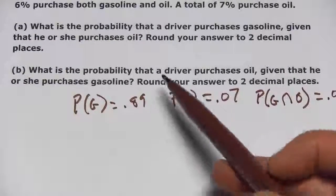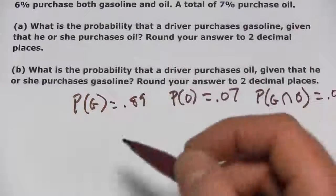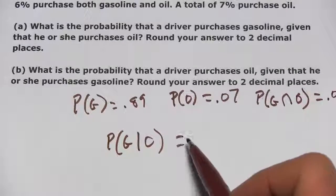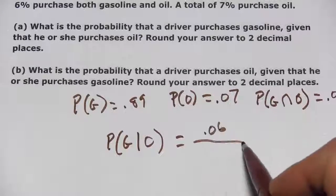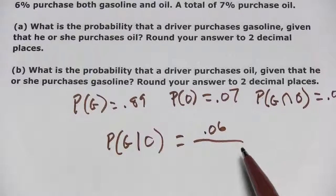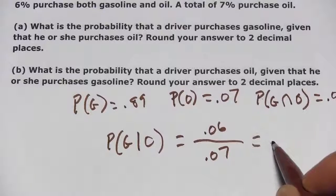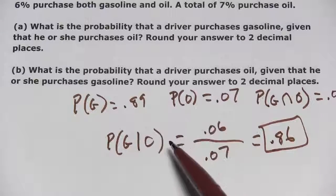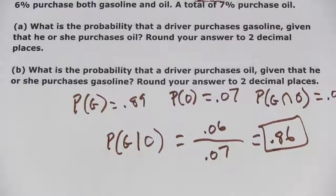Now the first part of the question asks: what is the probability that a driver purchases gasoline given that he or she purchases oil? The formula, remember, when something is given, is the intersection of those two things — so that's 0.06 — divided by the given, which is 0.07. And that is about 0.86, which is a pretty high probability. But when you think about it, they're asking when someone purchases oil, are they also purchasing gasoline? And most people purchase gasoline when they come to the gas station, so that makes sense.